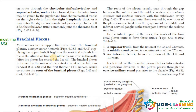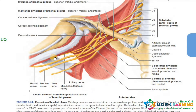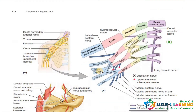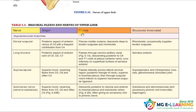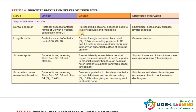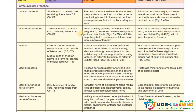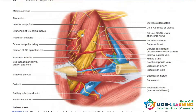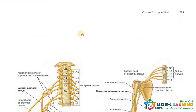Next comes brachial plexus — this is the most important university question of this chapter. You must memorize everything about it: the diagram, the theory, the blood supply, the nerve supply — everything. University questions also ask you to draw the brachial plexus figure. After that, the nerves of the brachial plexus and their table also need to be memorized.